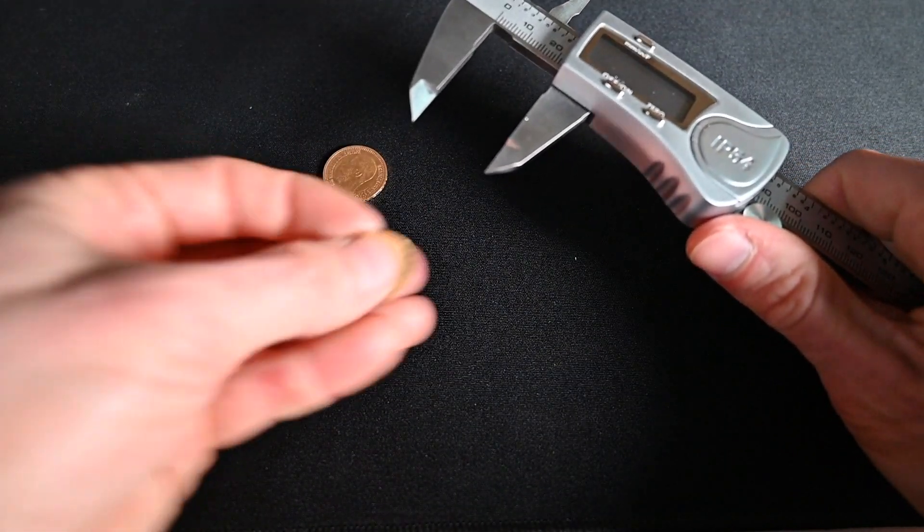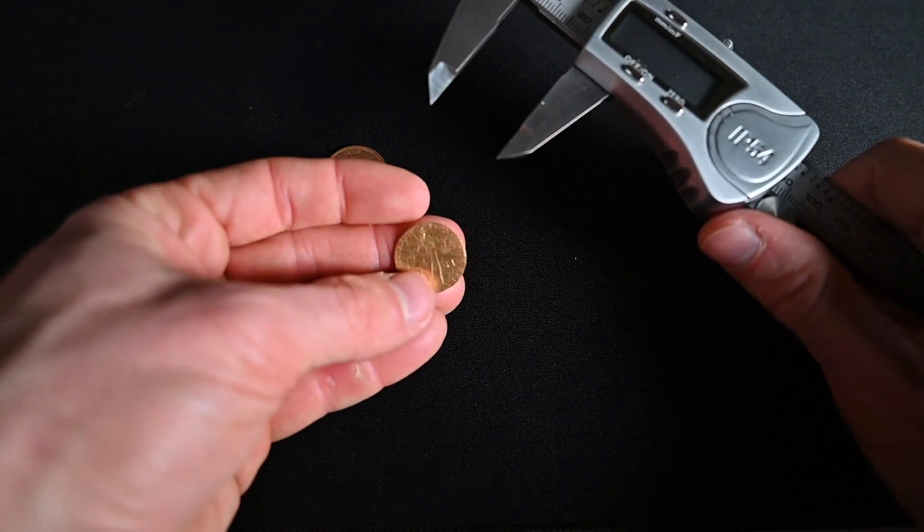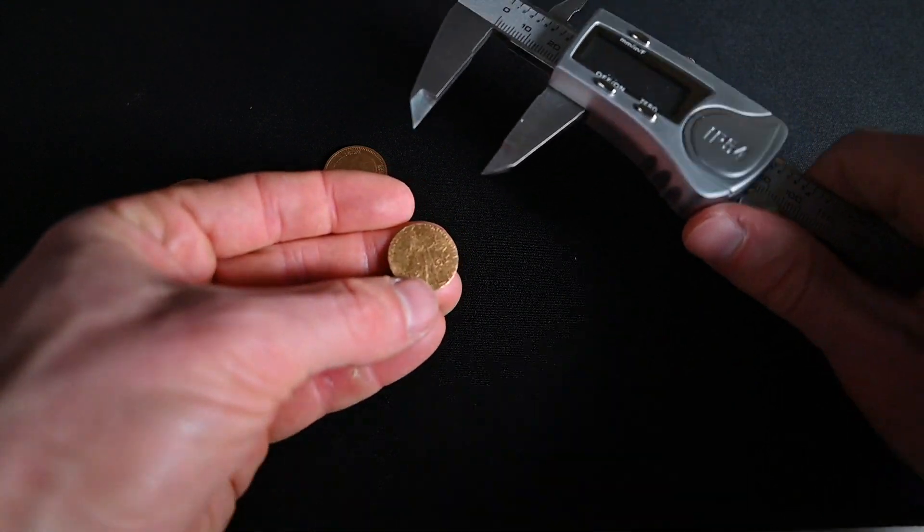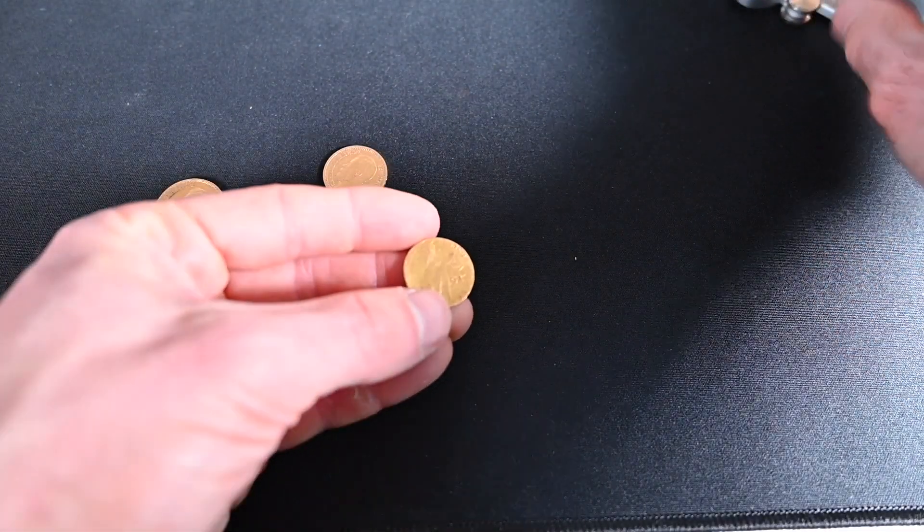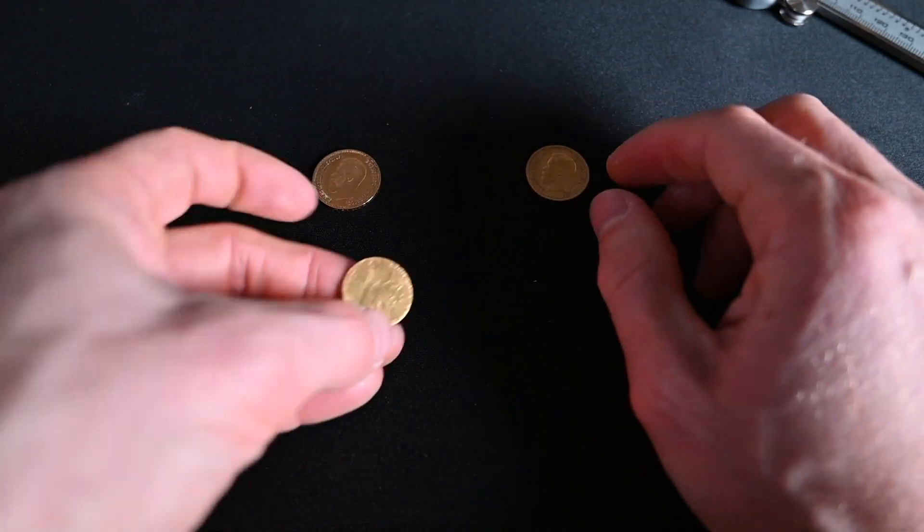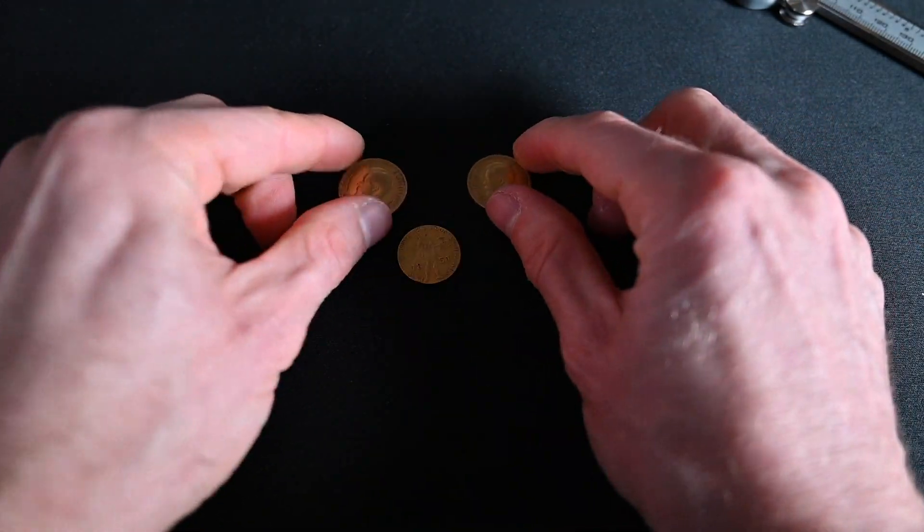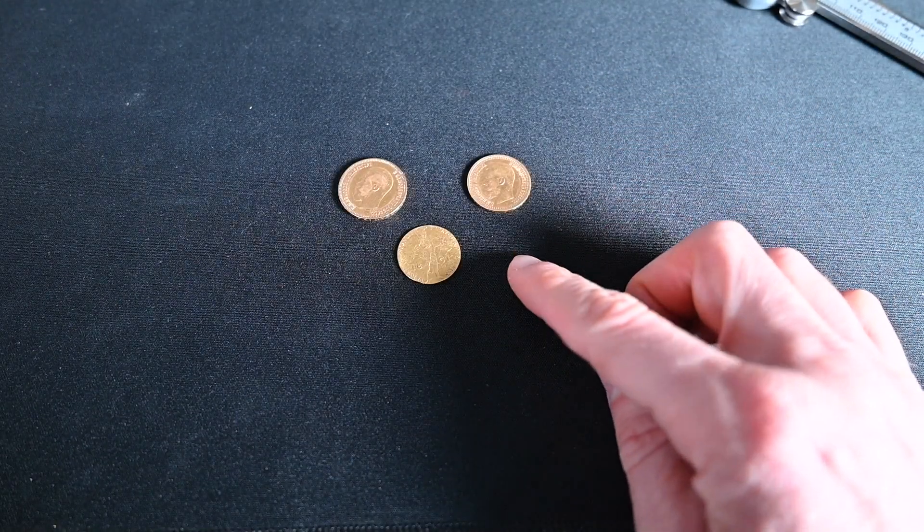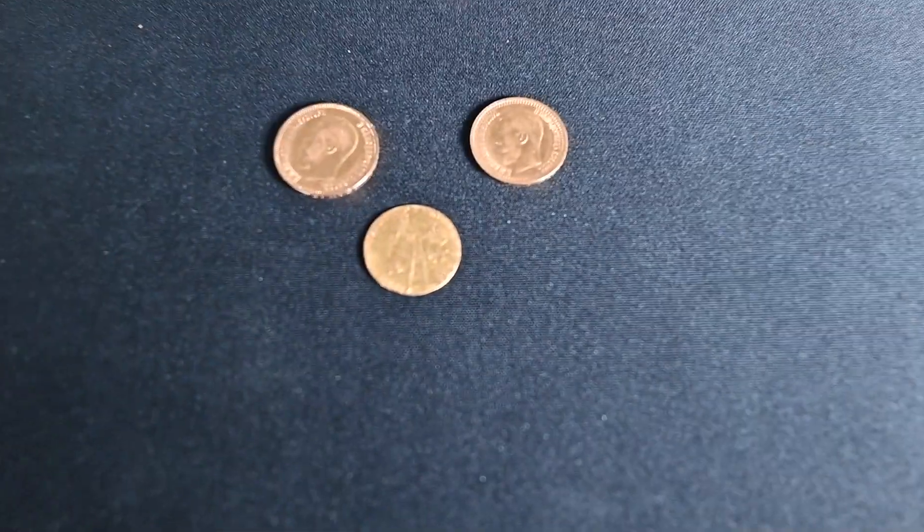Now, unfortunately, I don't have data for this one. And it is very thin, and it is worth more than its gold weight. So I am not going to put it in the calipers. But basically, this is a super simple way to determine whether or not your gold coins are real or not.